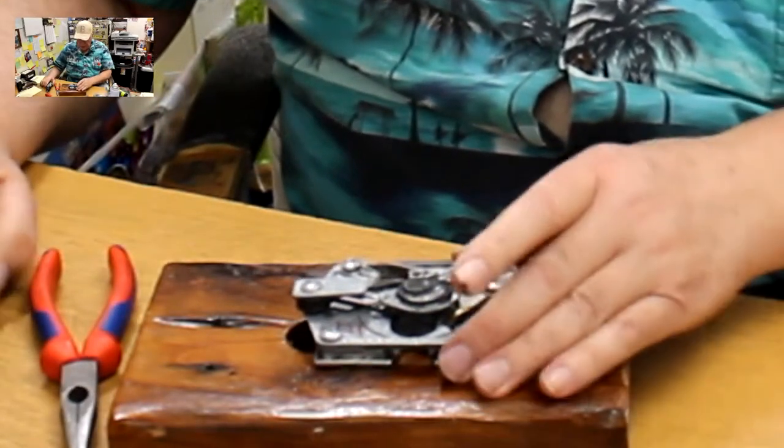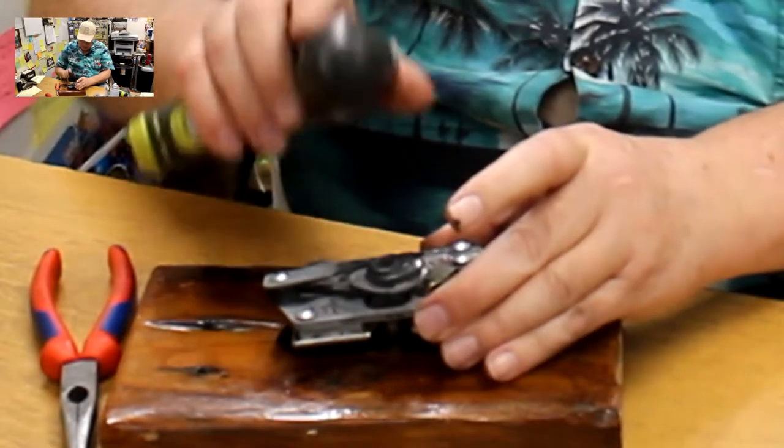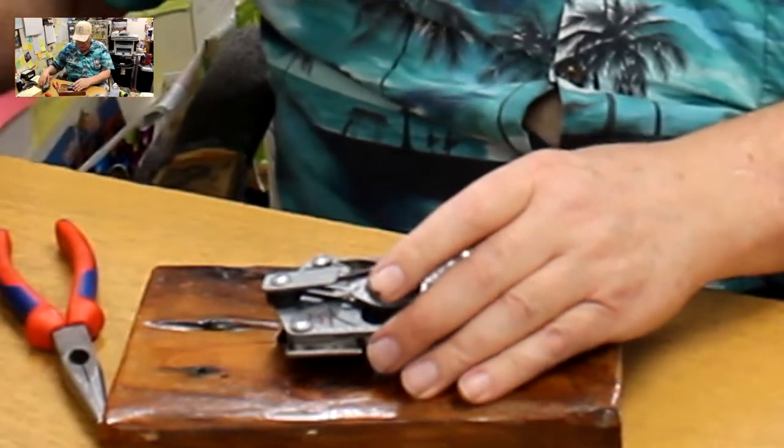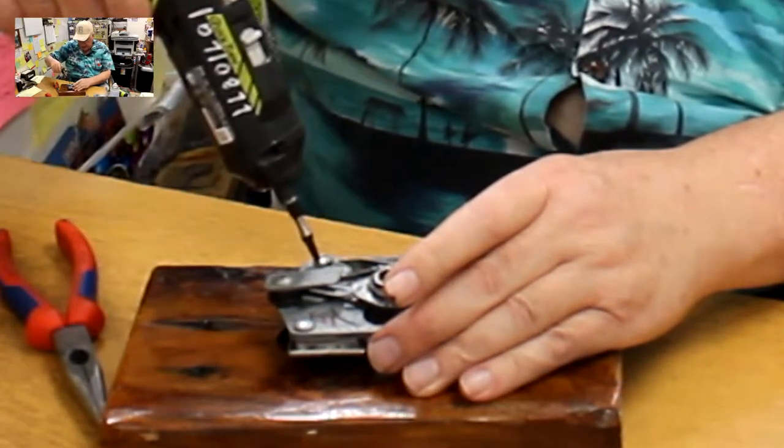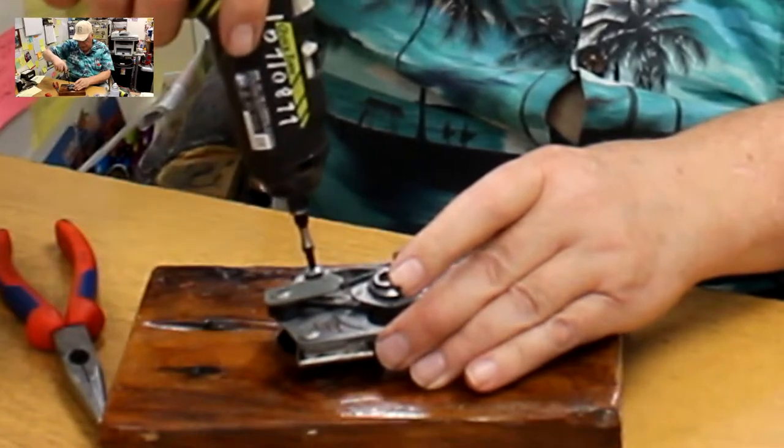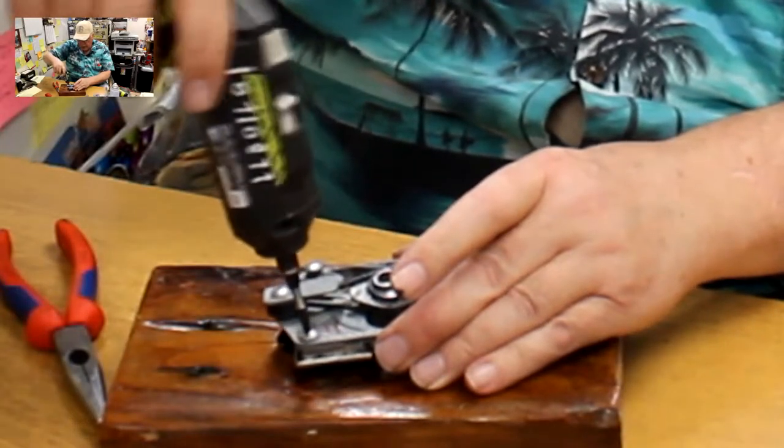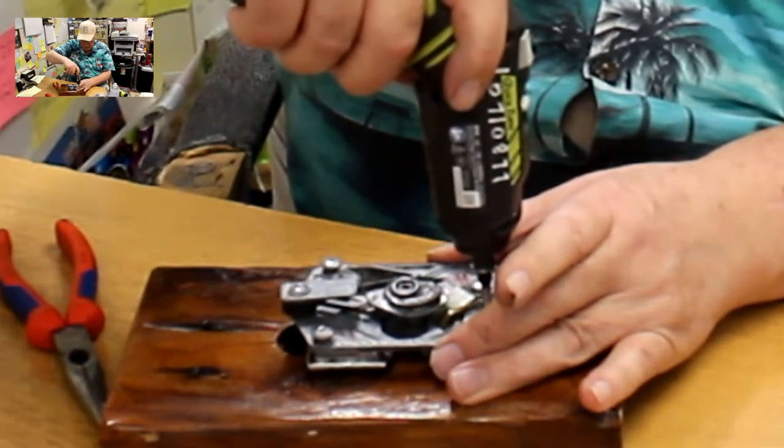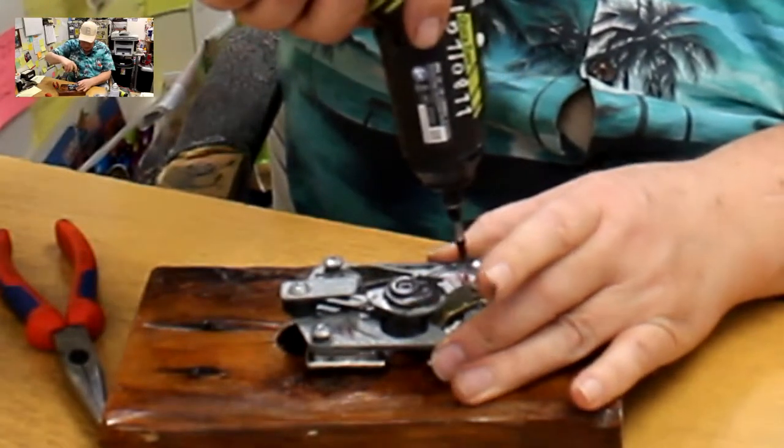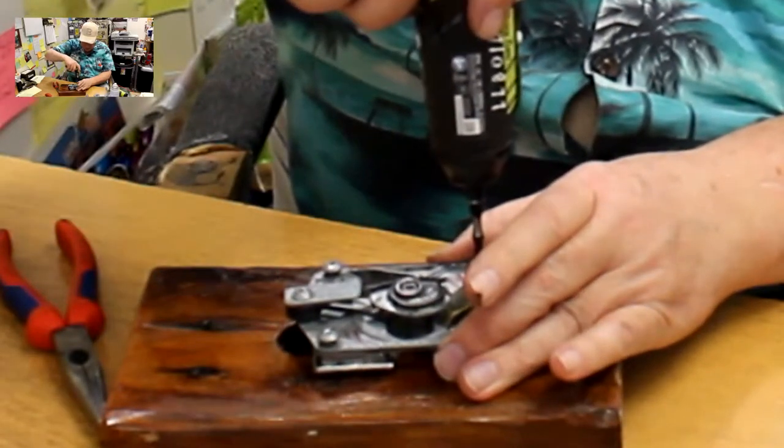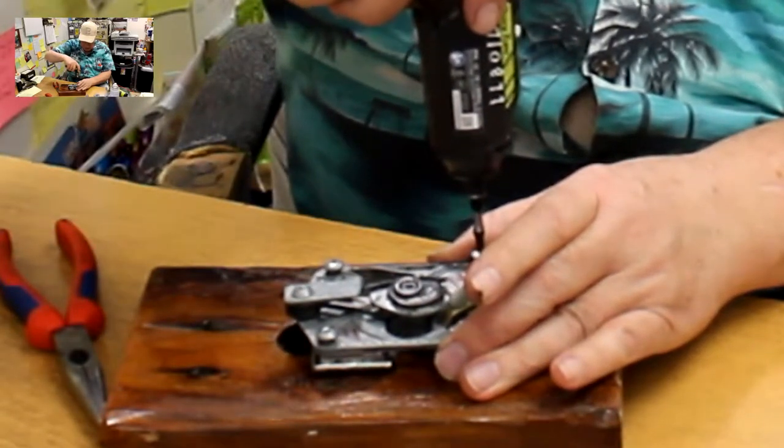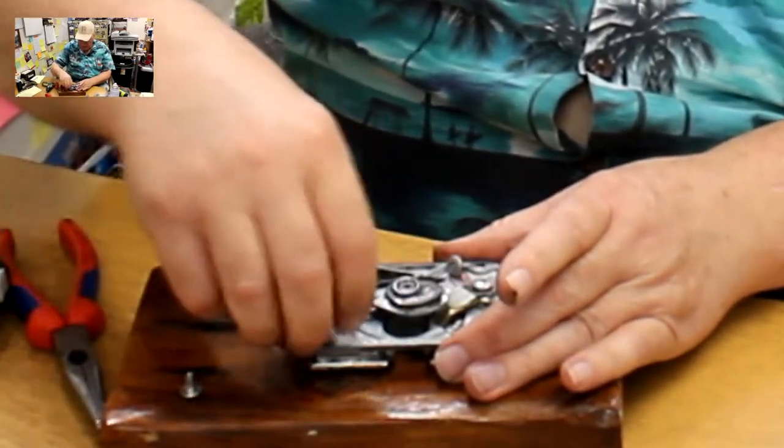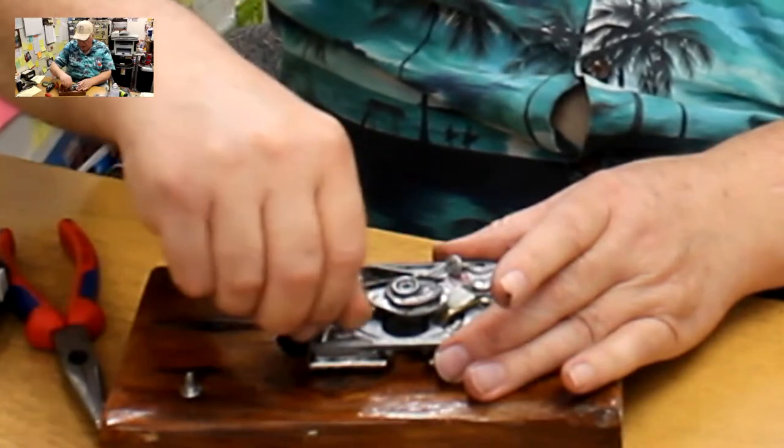We're going to loosen the handle like that, and then we're going to take off the back plate. Four screws on that, square drive or Robertson number two.